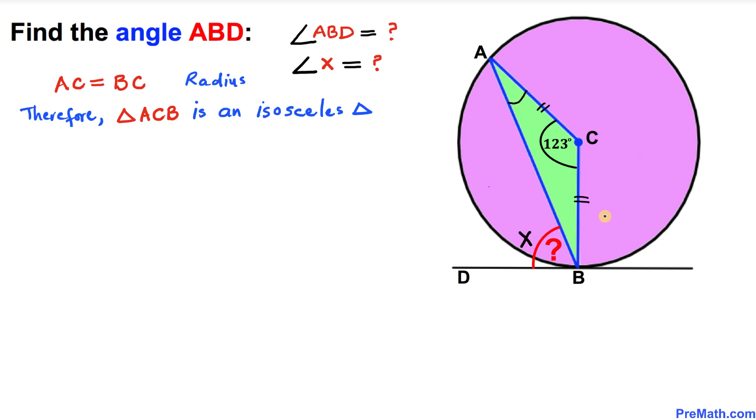If I call this angle theta on this side, then this angle has got to be theta as well. Now we know that the sum of three angles in any given triangle is 180 degrees. Therefore, the sum of these three angles has got to be 180 degrees. Let me write down: theta plus theta plus 123 degrees equals 180 degrees.